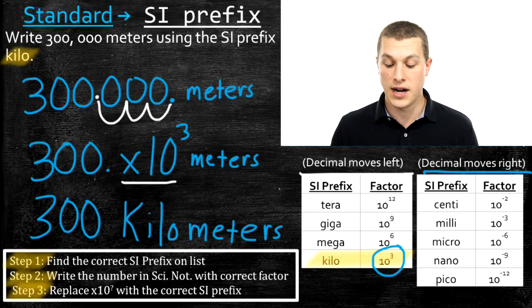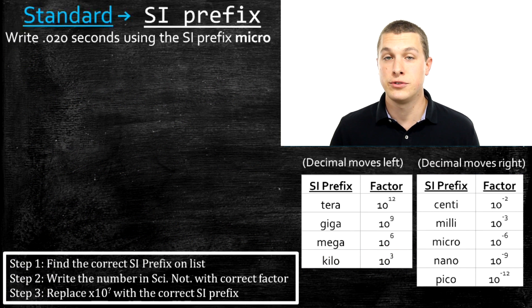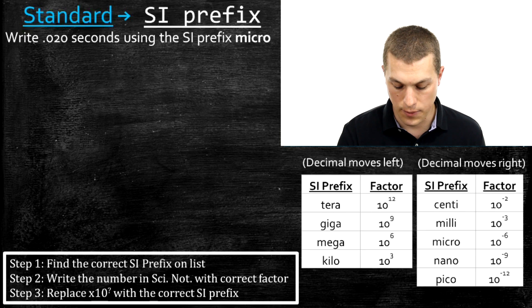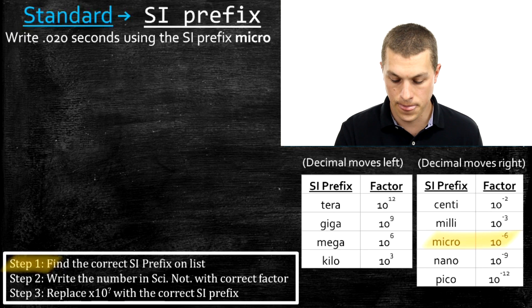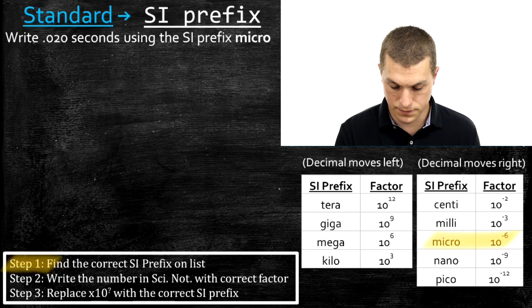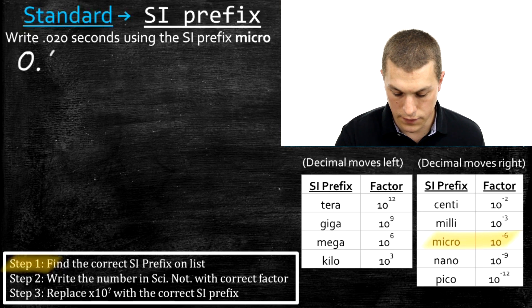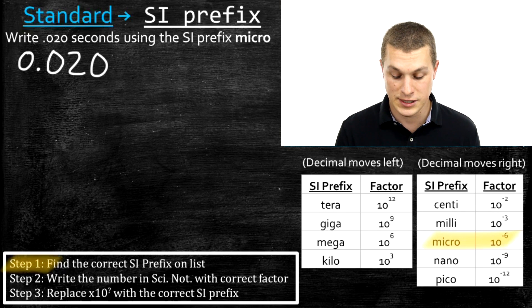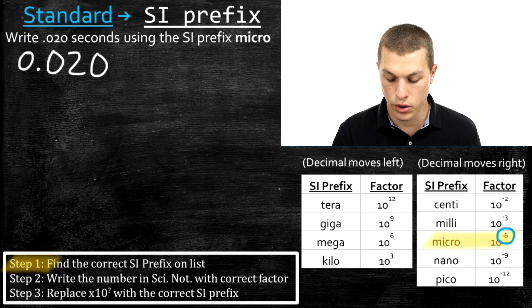Now we're going to go through another example. Write 0.020 seconds using the SI prefix micro. Step one: find the correct SI prefix on the list. We look and see micro is ten to the minus six. So we need to write that number in scientific notation using ten to the minus six, and we'll move the decimal six times because that's the number in our exponent next to micro.